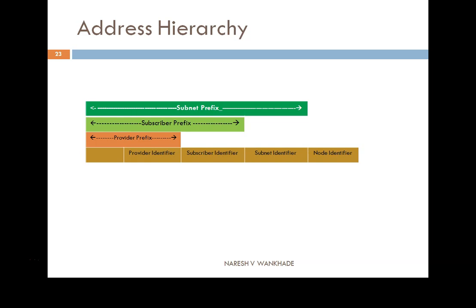The next part is the address hierarchy. The total length of this complete address is 128 bits. The first field is 8 bits. The provider identifier uses 16 bits, subscriber identifier uses 24 bits, subnet identifier uses 32 bits, and node identifier uses 48 bits. The subnet prefix uses 80 bits, the subscriber prefix uses 48 bits, and below that the provider prefix uses 24 bits. This is the complete hierarchy of the address associated with the provider-based unicast address.